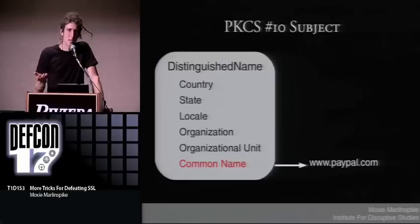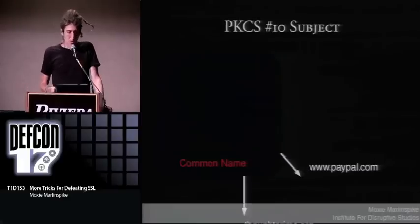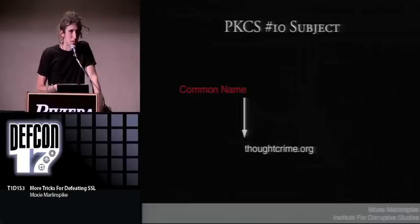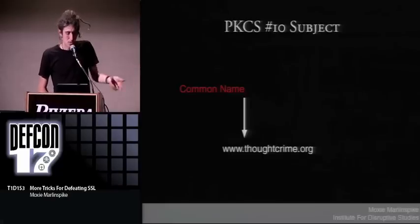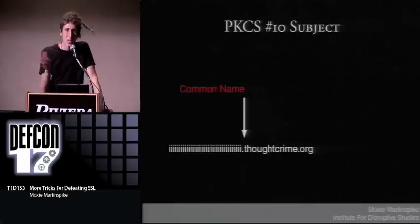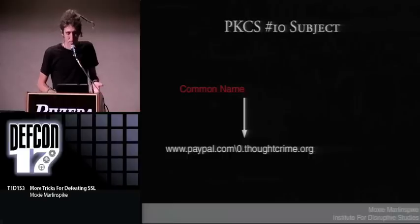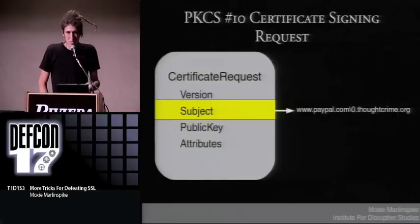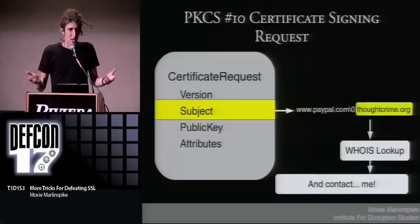We'd like to get a certificate with a subject having a common name of www.paypal.com, but we don't own paypal.com. However, I do own thoughtcrime.org. I can put thoughtcrime.org in the common name field of a certificate — it will look up the WHOIS information and everything would be fine. I can put whatever I want: www.thoughtcrime.org, verisignedschildren.thoughtcrime.org, even things that don't exist — they don't care. I can even put www.paypal.com[nullcharacter].thoughtcrime.org. If I submit a certificate signing request for www.paypal.com[nullcharacter].thoughtcrime.org, they will dutifully look up thoughtcrime.org in the WHOIS database, pull up my contact information, and contact me.